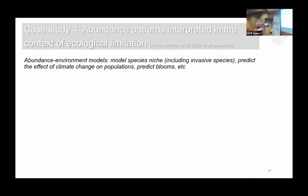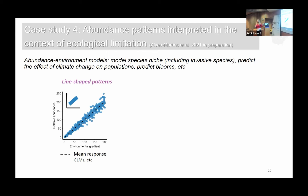The literature has assumed that abundance-environment relationships have a linear shaped pattern. People use traditional metrics like GLMs and linear regression to model abundance-environment relationships. But the problem with these traditional methods is that they assume the response is linear and constant along the environmental gradient.